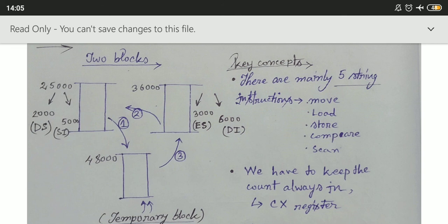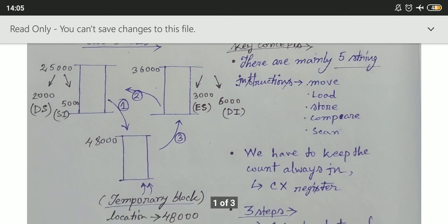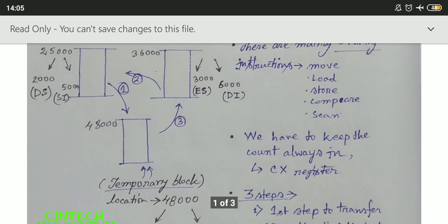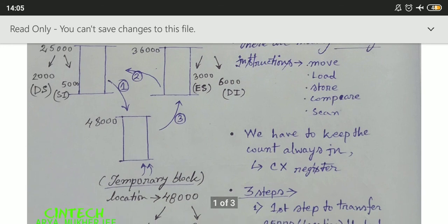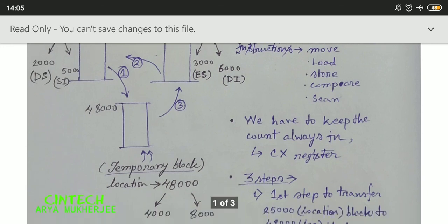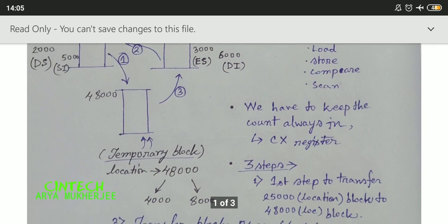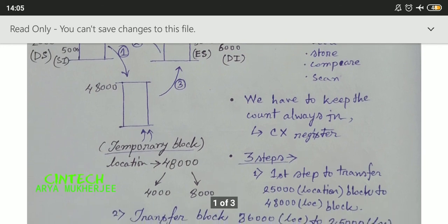We have some key concepts for this programming. There are mainly five string instructions: move, load, store, compare, and scan. We have to keep the count always in the CX register — by default, that is a rule we have to follow.